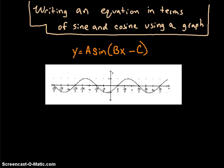Okay, so write an equation in terms of sine and cosine using this graph. The things you need to start with are going to be the a value, the b value, the c value, and eventually we're going to have a d value at the end. Right now it's just those three.